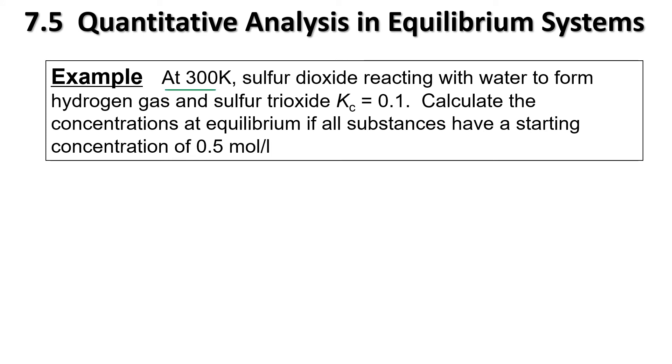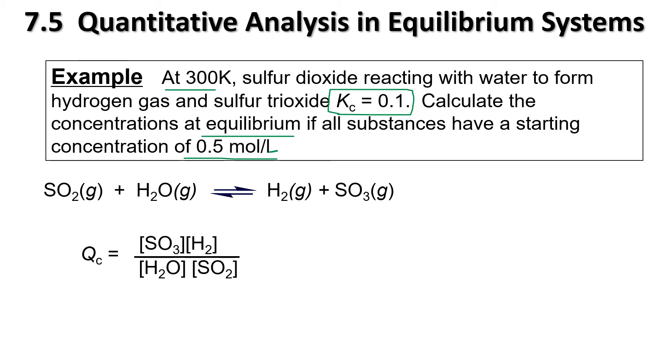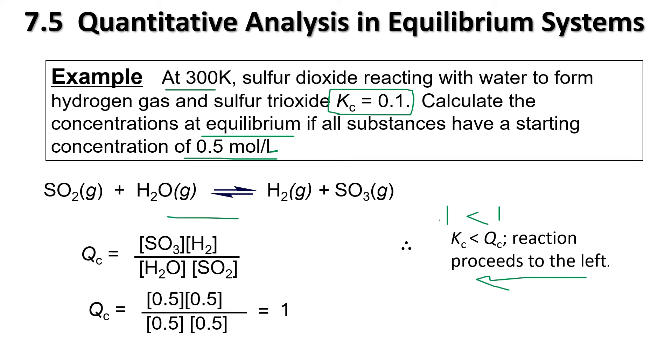Next example, at 300 Kelvin, sulfur dioxide reacts with water to form hydrogen gas and sulfur trioxide. And we have a Q value given here as well. And we want to calculate the concentrations at equilibrium if all substances have starting concentrations of 0.50 moles per liter. So, we do have our given concentration. So, first step is there is our balanced equation. And we're going to calculate our Q value. We're going to plug in all of our 0.5s. And we'll notice that this time it's equal to 1. So, our comparison is that 0.1 is less than 1. So, we're going to be proceeding to the left. So, these ones are going to be increasing here. So, let's reflect that in our ice chart.